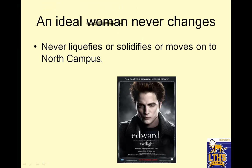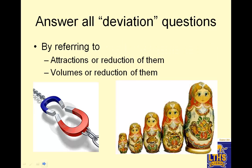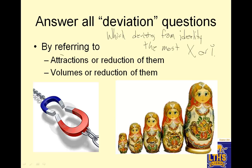An ideal gas never changes — it never liquefies or solidifies. A real gas can turn into a liquid or a solid, but an ideal gas never does. For deviation questions, the question would be: which deviates from ideality the most? You'll talk about attractions or reducing attractions, and about volumes or reducing volumes.